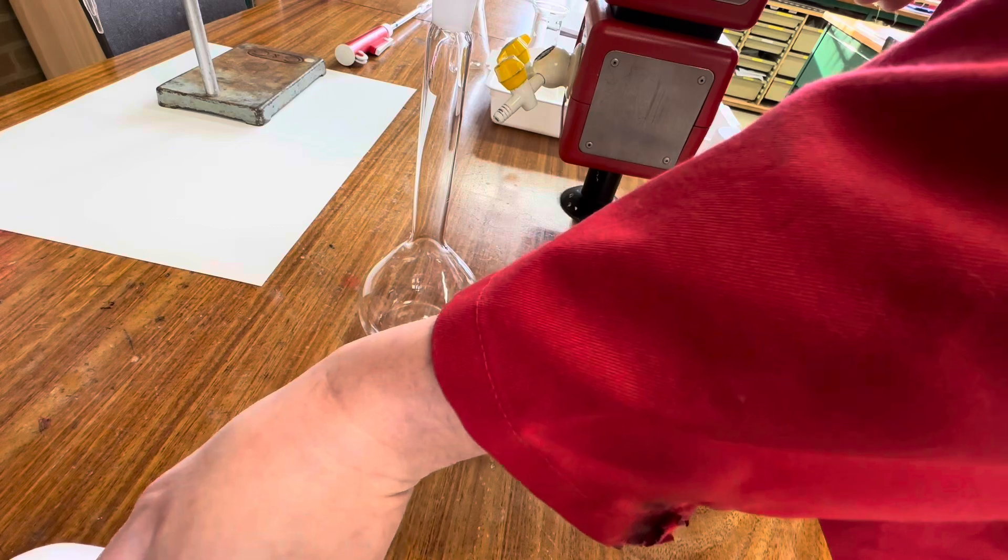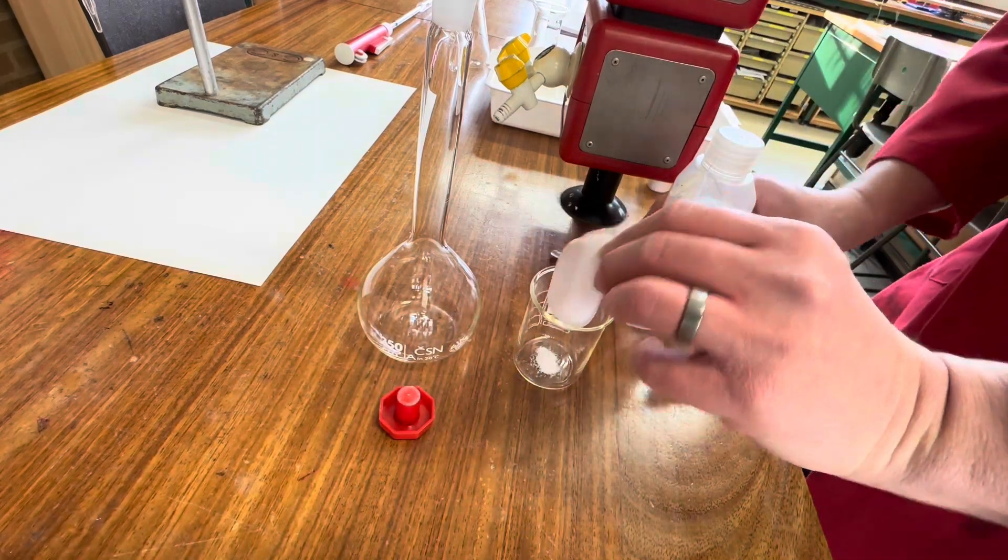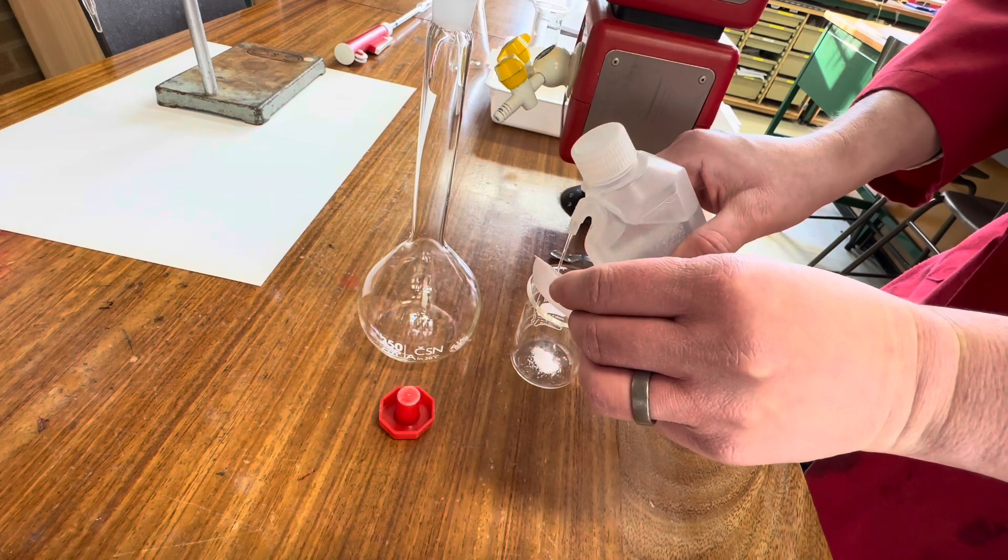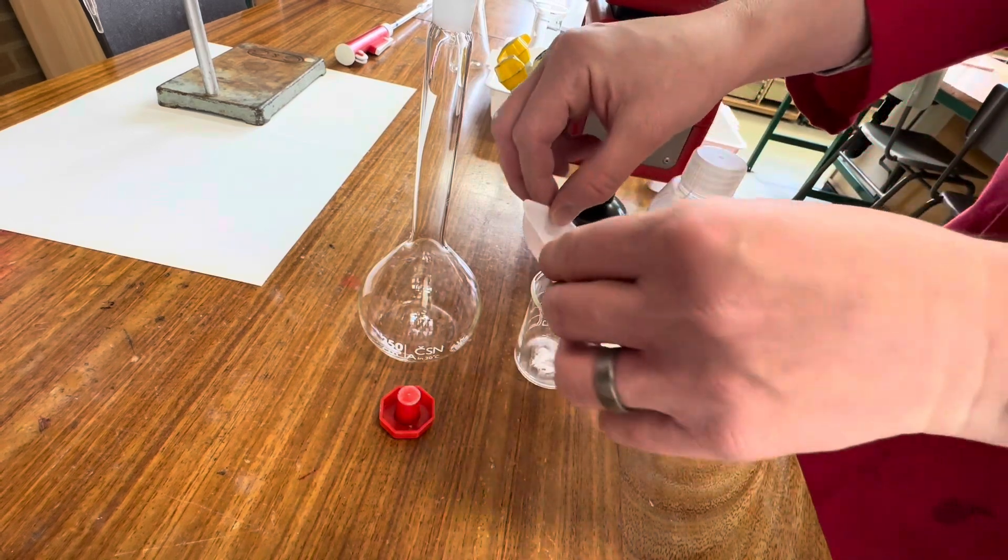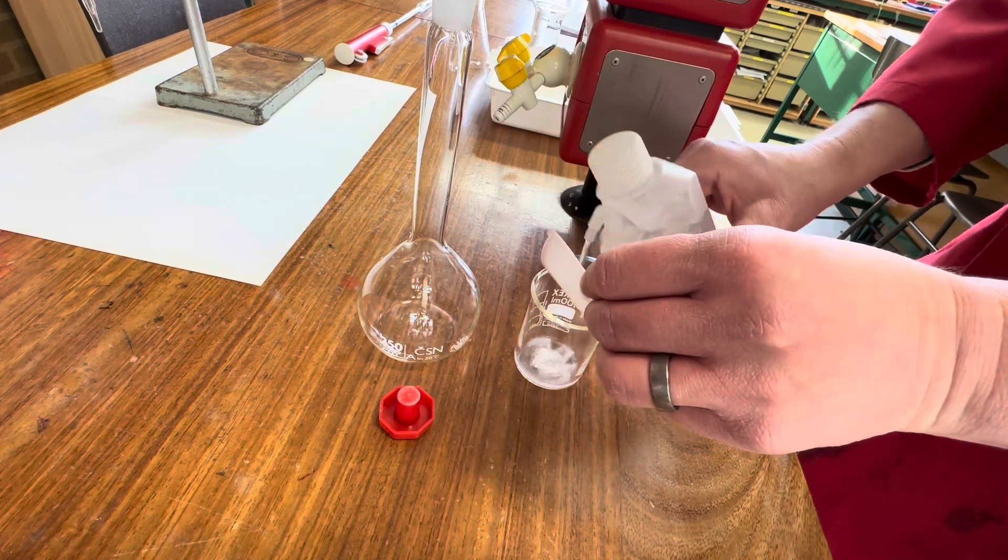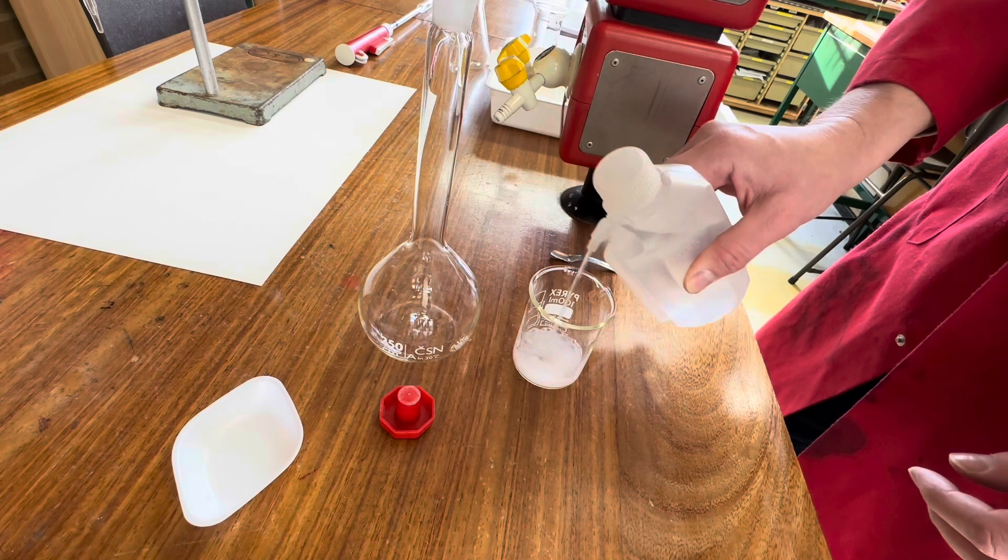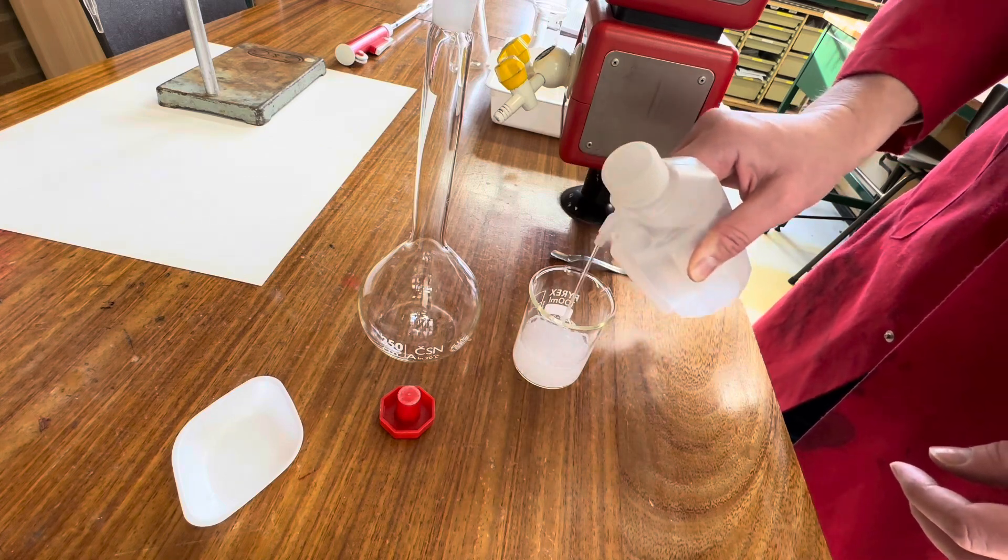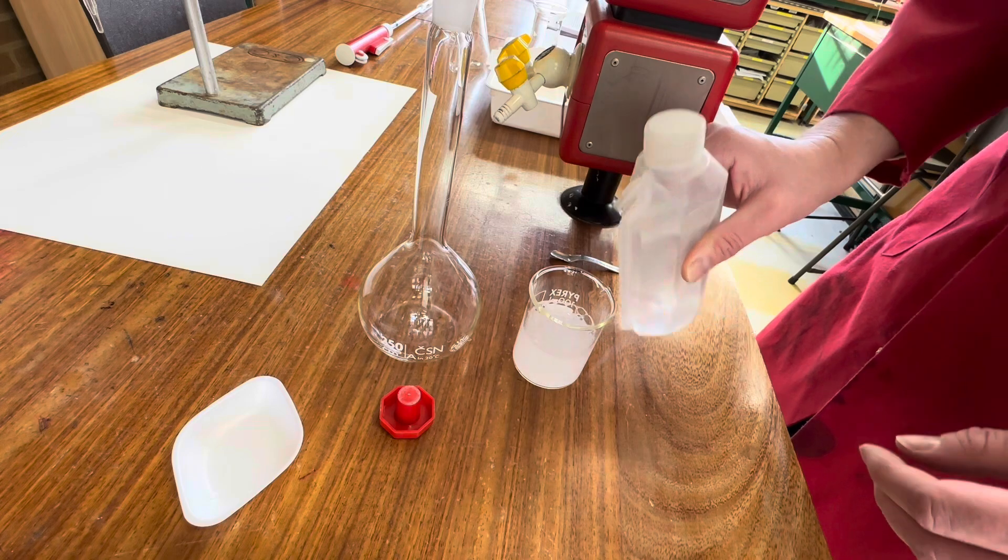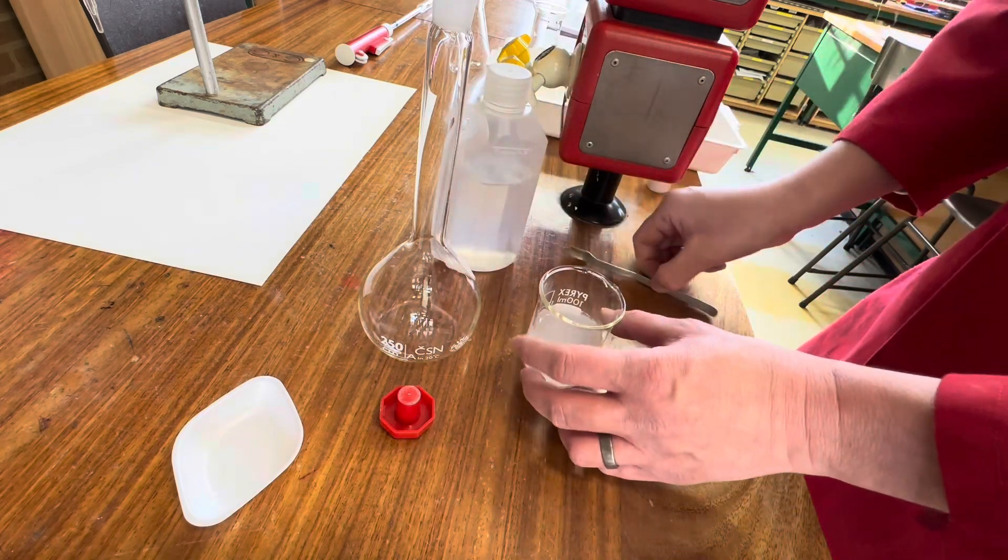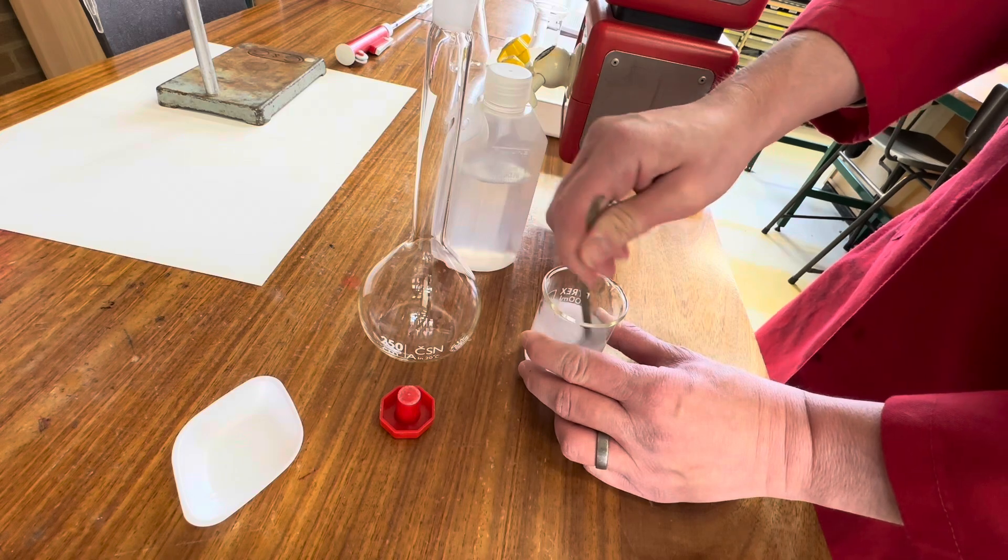So now we're going to make our standard solution. We're going to rinse the powder off the weighing boat into here, making sure that all of it is in there. The next step is we're going to add some water. So long as it's less than 250 milliliters, that's fine. But we want to see it all dissolve. We're going to stir it until it's all gone.